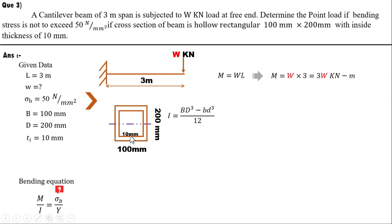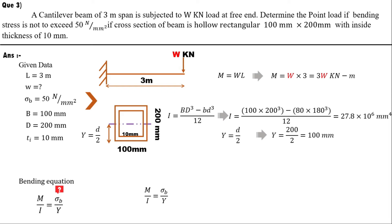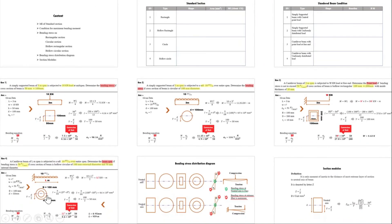Subtracting the wall thickness of 10 mm from outer dimensions 100 mm and 200 mm gives inner dimensions b = 80 mm and d = 180 mm. Putting these into the hollow rectangular formula gives I = 27.8 × 10⁶ mm⁴. With y = D/2 = 100 mm, converting 3W kN·m to 3W × 10⁶ N·mm and solving, we get W = 4.63 kN.